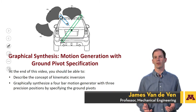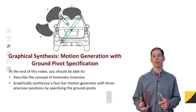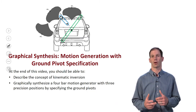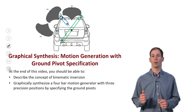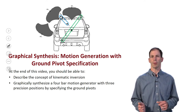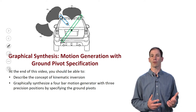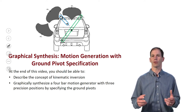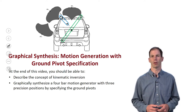In the previous lecture we talked about doing graphical synthesis for a motion generation problem, and in that case we picked the moving pivots. But one thing we're going to find when we pick moving pivots is we really don't have any control over where our ground pivots end up, or we have very little control and then we have to iterate to define where our ground pivots are.